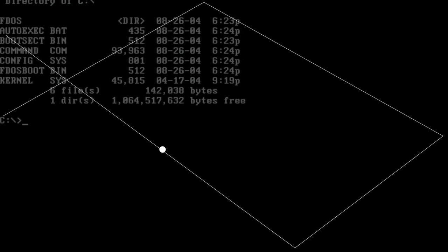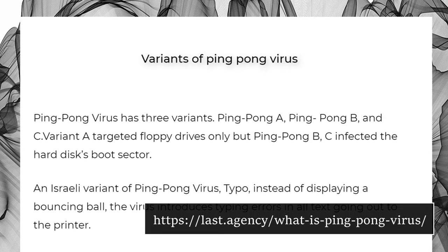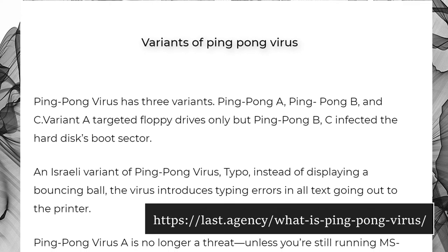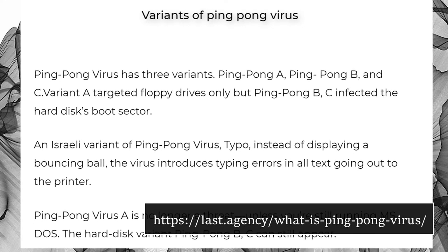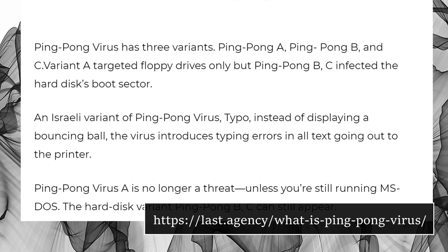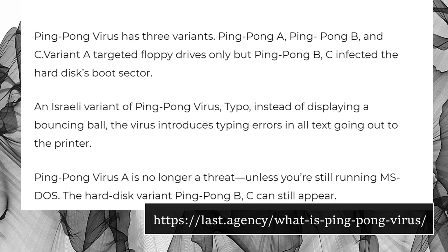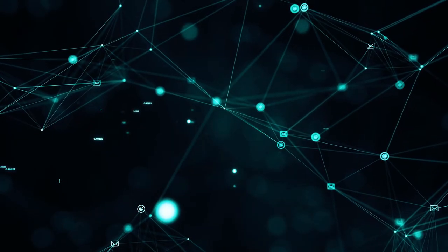The virus was quite benign, as it only drew some annoying graphics. There were a few variants which had some noticeable differences. The typo variant would cause errors when writing documents to printers, instead of a bouncing ball. Other variants, Ping-Pong B and Ping-Pong C, would infect hard disks. The virus, however, did not infect many computers and is considered extinct — including the variants, which are considered extinct as well these days.